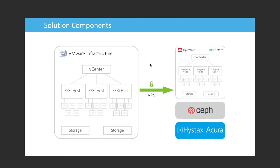Hi everyone. Today I'll do a quick demo of real-time migration of a business application from VMware platform to Canonical OpenStack. Our infrastructure consists of the following components: we have VMware infrastructure on the left, Canonical OpenStack object storage — in our case it is Ceph — on the right, with a secure connection between the left and right paths.